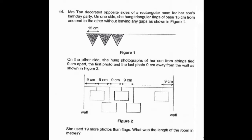On the other side, she hung photographs of her son from strings tied 9 cm apart. The first photo and the last photo was 9 cm away from the wall as shown in figure 2. She used 19 more photos than flags. What was the length of the room in meters?